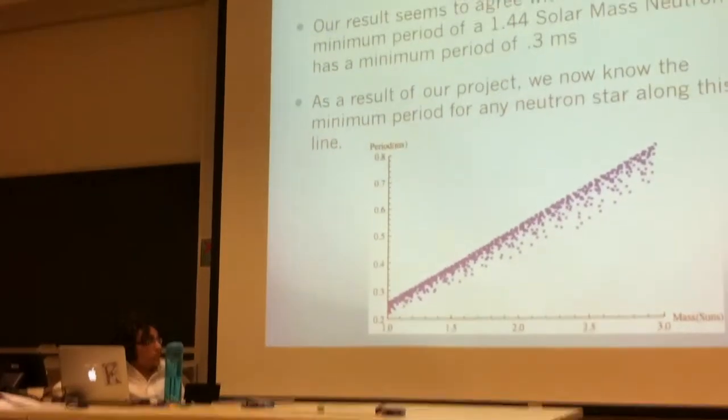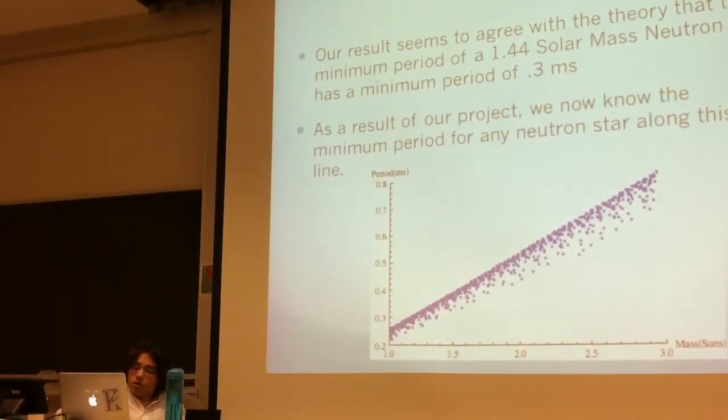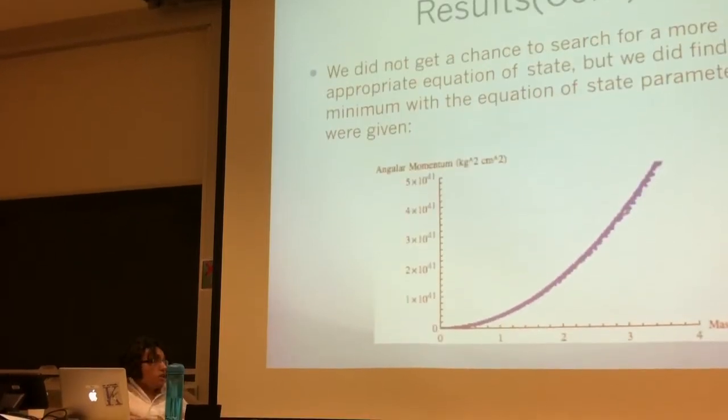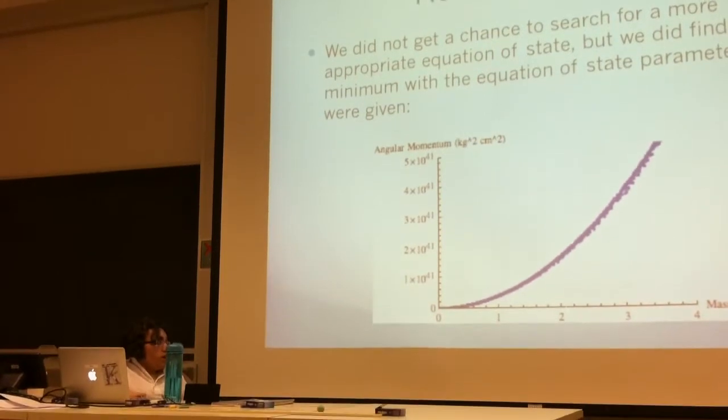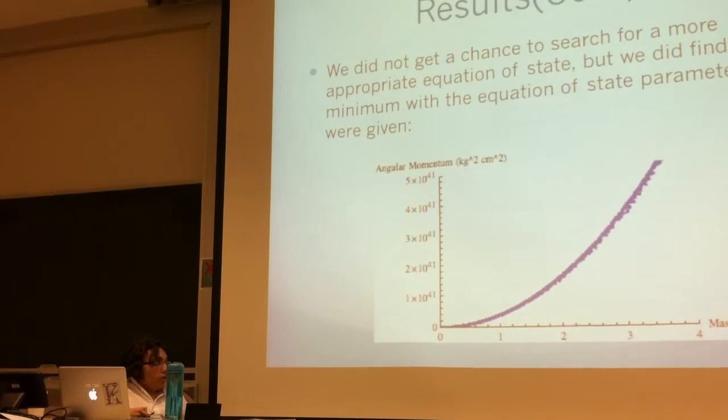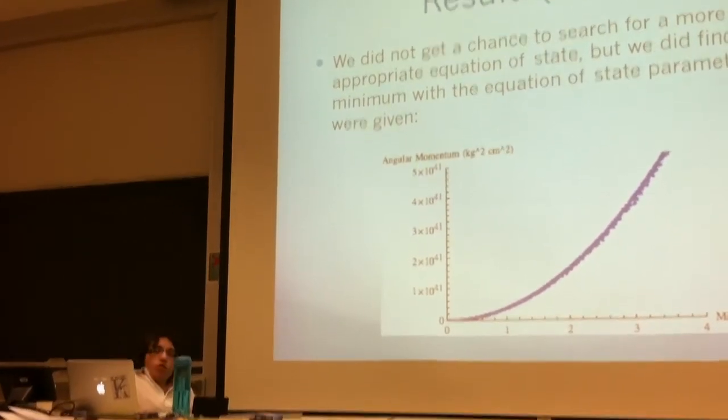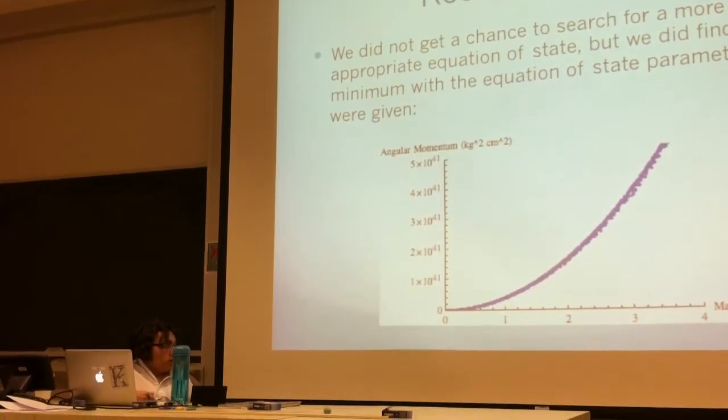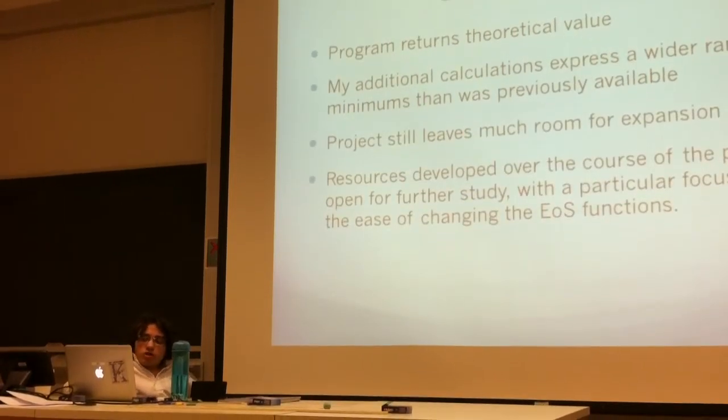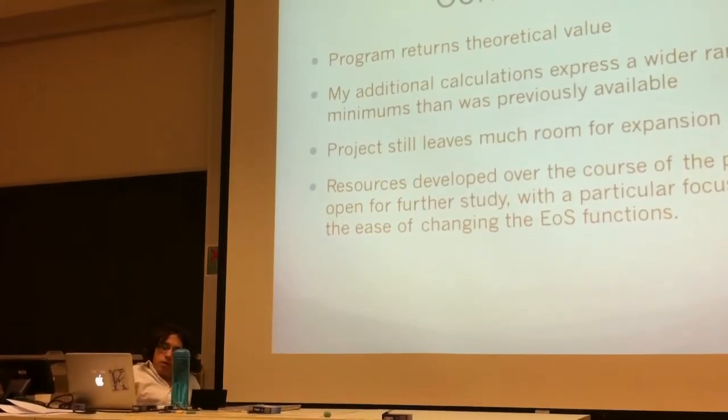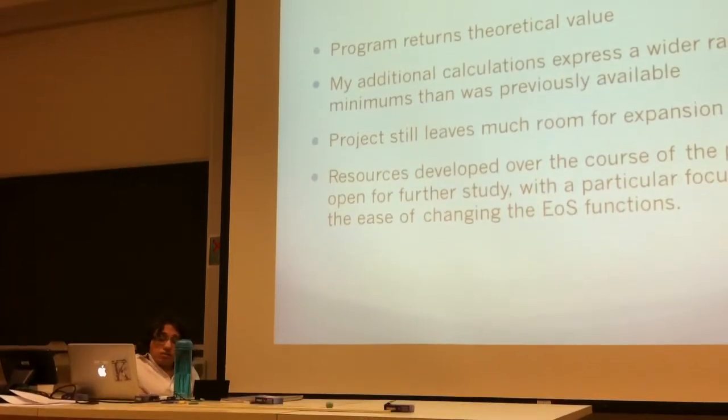So yeah, we slightly expanded the knowledge pool that they had, or probably significantly expanded the knowledge pool that they had originally when they published their results. We did not get a chance to search for an optimal equation of state for our angular momentum, but here is the maximum line for that. And so the reason we constrain, we actually got a much larger value for the mass of suns, but like I said before, at that point it did begin to collapse to a black hole. So this is the only, from about one to three solar masses is what we're having today. So our program returned the theoretical value that they had determined. My additional calculations allowed for a wider range of minimums than the previous year variable. The project still has a lot of error to be explored with greater studies, and more varied minimums and maximums can be explored.